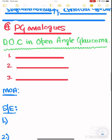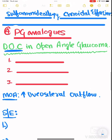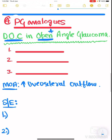The fourth and most important type of drug is prostaglandin analogues. The mechanism of action is that it increases the uveoscleral outflow of aqueous humor. It is the drug of choice for open-angle glaucoma, but not angle-closure glaucoma. Examples are latanoprost, travoprost, and bimatoprost.